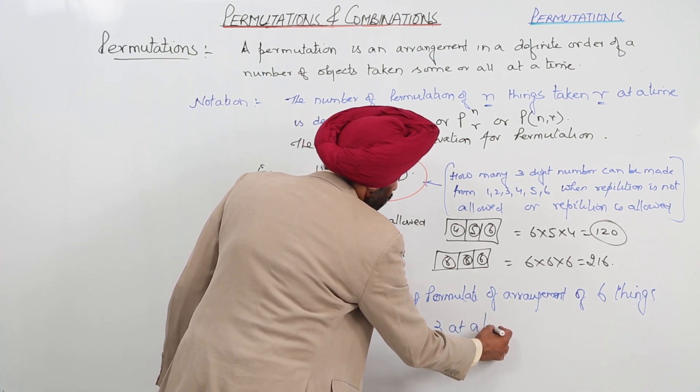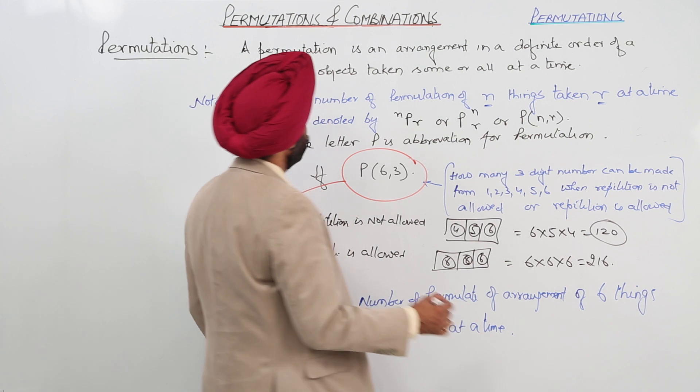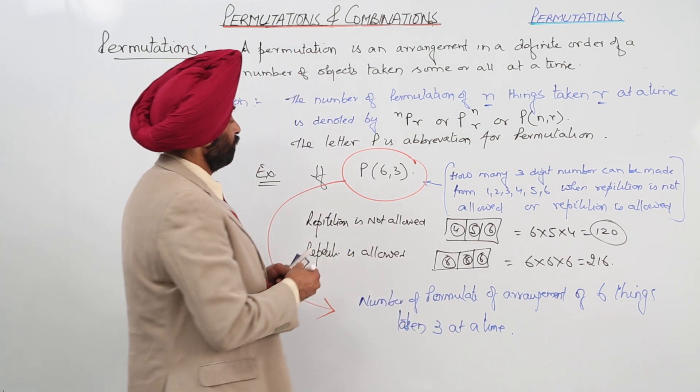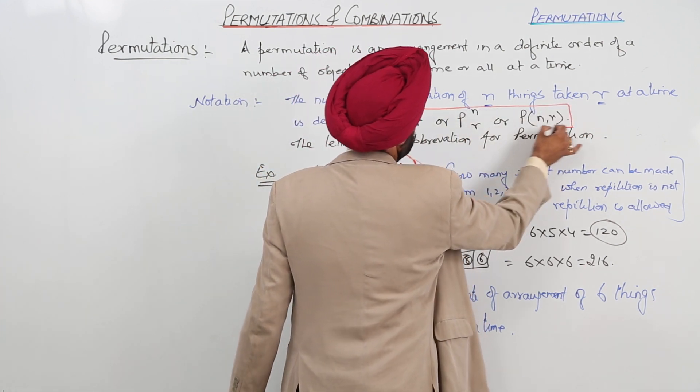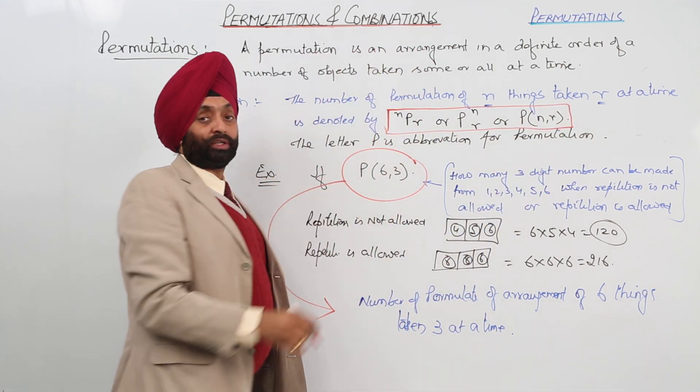Is it clear? Now, I have made each and everything very clear about this one and about this one. This is a permutation.